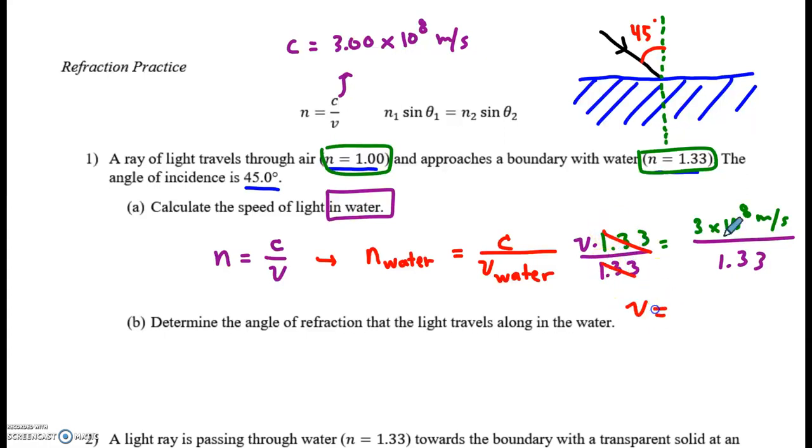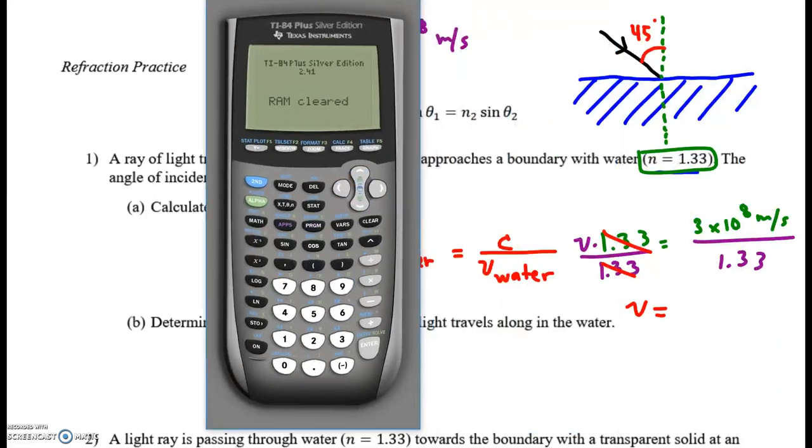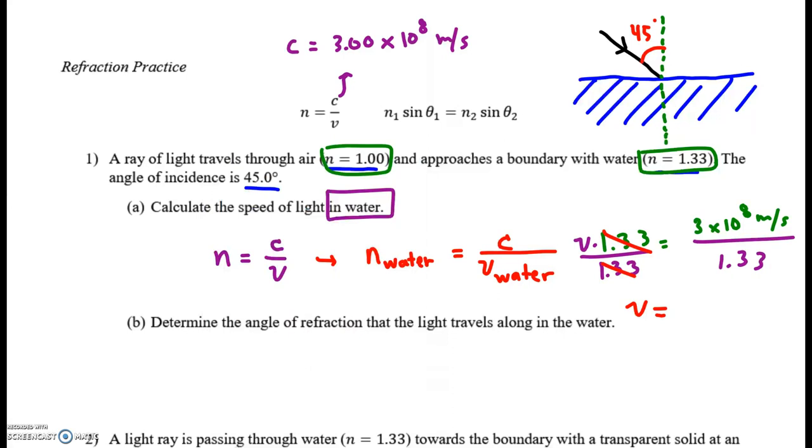And V is, let's get the calculator out. V is 3 second EE. Use that second EE button. Over 1.33. And we get, well, if you count up, 1, 2, 3, 4, 5, 6, 7, 8. This is 2.26 times 10 to the 8.